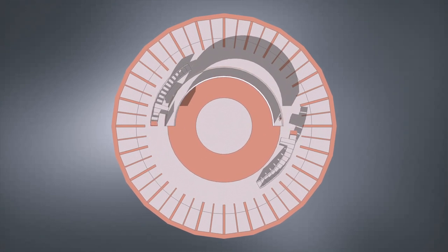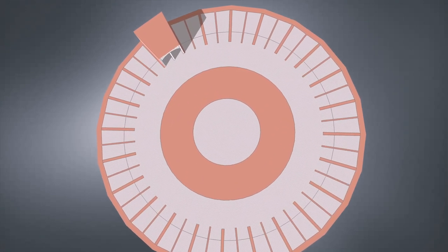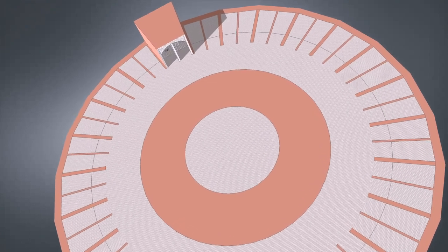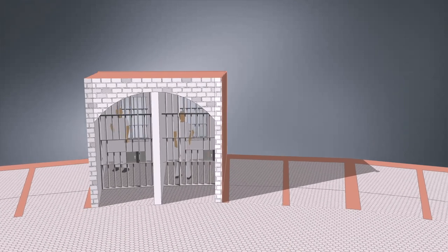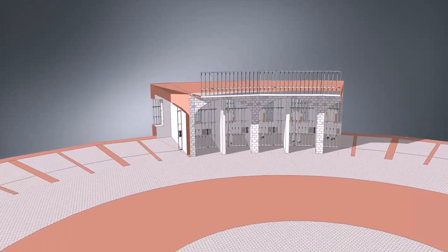A circle of diameter of 100 feet. Around the perimeter of this circle stretch cells. Each cell is 9 feet deep and 48 per floor.